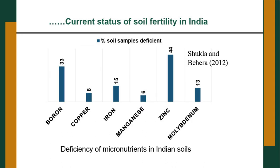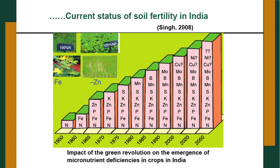Regarding micronutrient status (Shukla and Bera 2012), large samples analyzed across the country found that 33 percent were deficient in boron, 8 percent in copper, 15 percent in iron, 6 percent in manganese, 44 percent in zinc, and 13 percent in molybdenum. There are also reports of sulfur deficiency in large areas. The impact of the Green Revolution on micronutrient deficiencies shows that starting from the 1950s with nitrogen deficiency, new deficiencies have emerged progressively — iron from the 1960s, phosphorus from 1965, zinc throughout, then potassium, sulfur, manganese in the 1980s, boron in 1985, molybdenum in 1990, and copper around 2000.